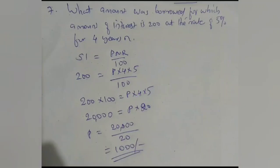Then 20,000 is equal to P into 20. So P is equal to 20,000 divided by 20, which is 1,000. This is the principal amount borrowed.